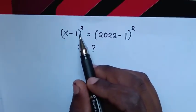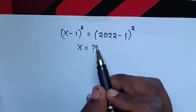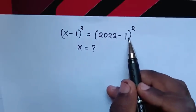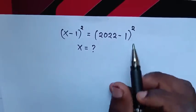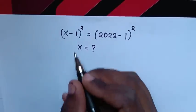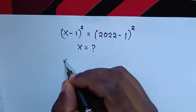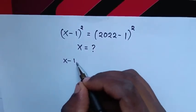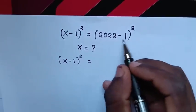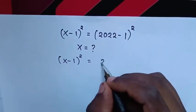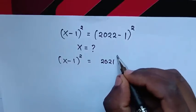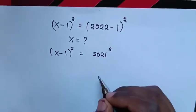How to solve (x-1)² = (2022-1)² to find the value of x. This simplifies to (x-1)² = 2021².